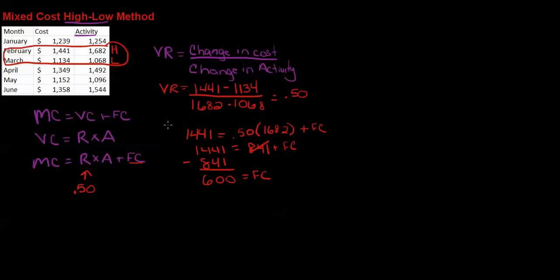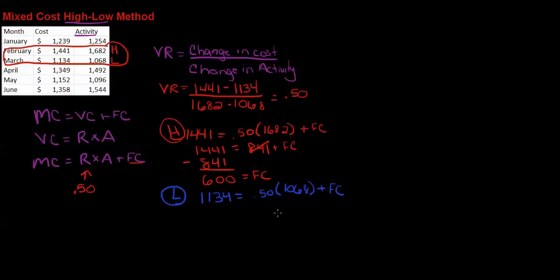That was using the high point. Now let's verify with the low point: 1134 equals 50 cents times 1068 plus fixed cost. That's 534 plus fixed cost equals 1134. Subtracting from both sides, I again get fixed cost equals 600.